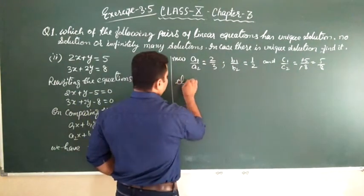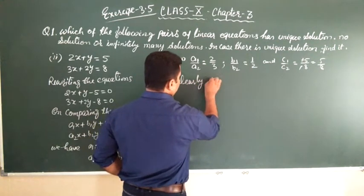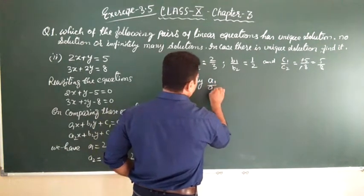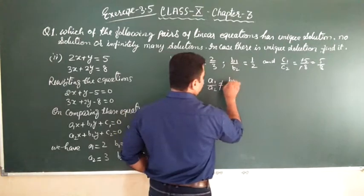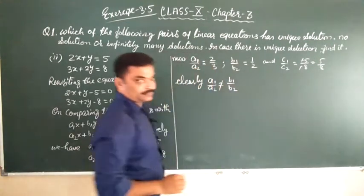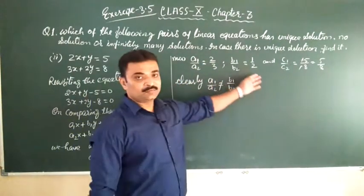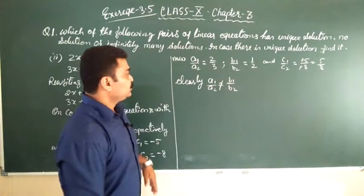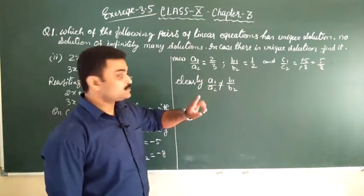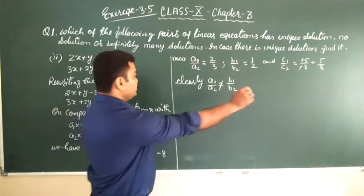Students, clearly a1 upon a2 is not equal to b1 upon b2 because 2 upon 3 is not equal to 1 upon 2. This satisfies the first condition. That means we have a unique solution.